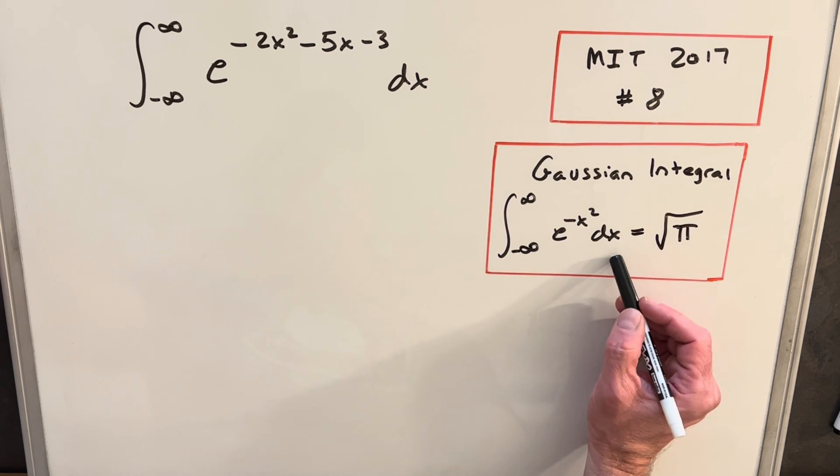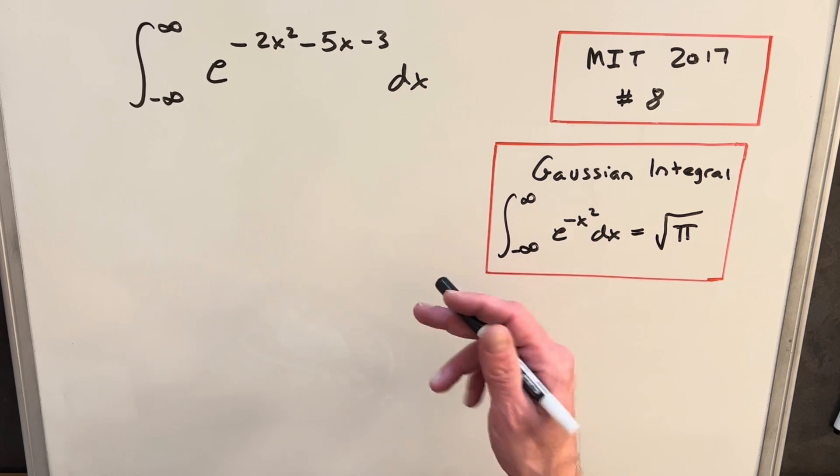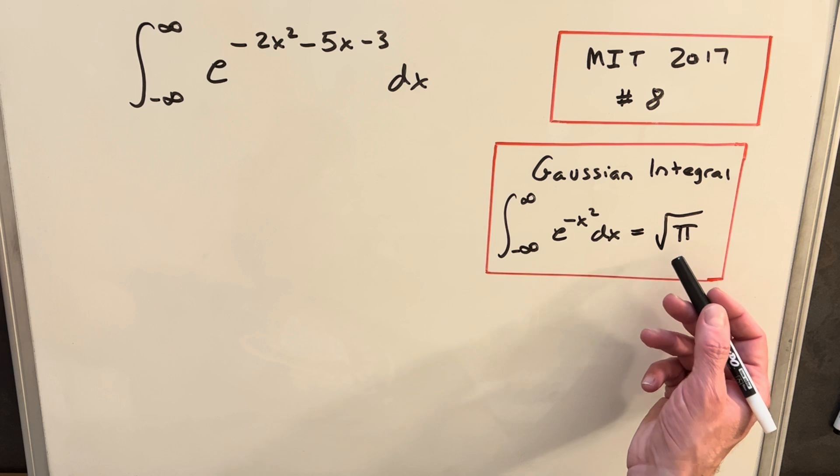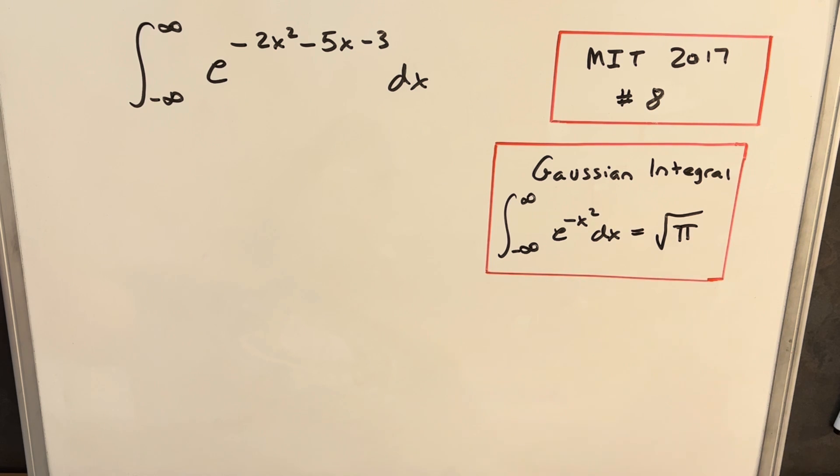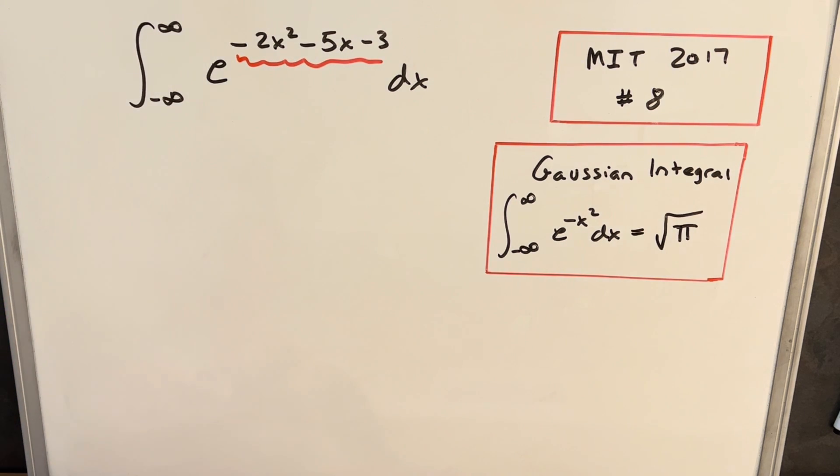So we won't derive how we got this today, but if we can get our integral into this form, or with a u substitution get it into something like this, we'll then know that that piece of the integral is going to be the square root of pi. And so then what this is going to come down to, it's all about what we can do with our exponent here. How can we manipulate this to get it into this form?